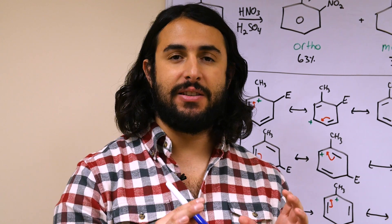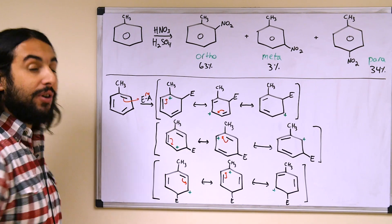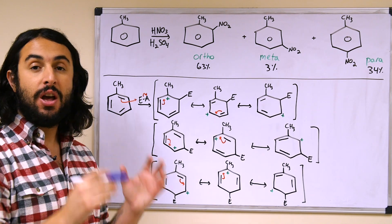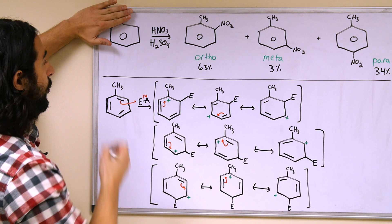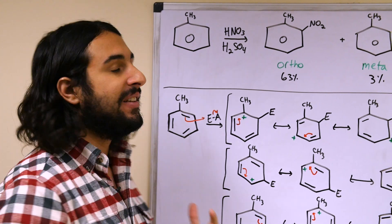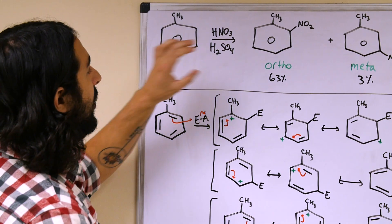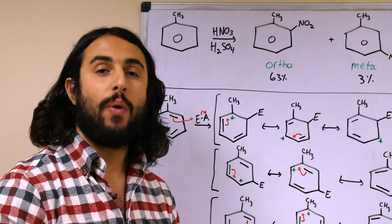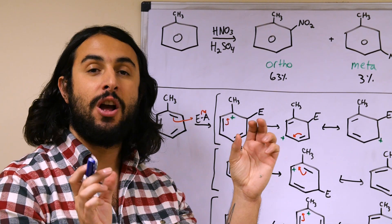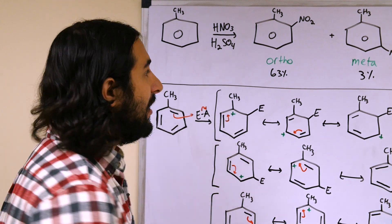We looked at examples of EAS reactions on unsubstituted benzene rings, but what if we tried to do an EAS reaction on a benzene ring that already had a substituent present? These are the conditions for nitration — putting an NO2 substituent on a benzene ring. If there were no methyl group, we'd just put an NO2 anywhere, but the methyl group means there are different possible structural isomers for the nitrated product.